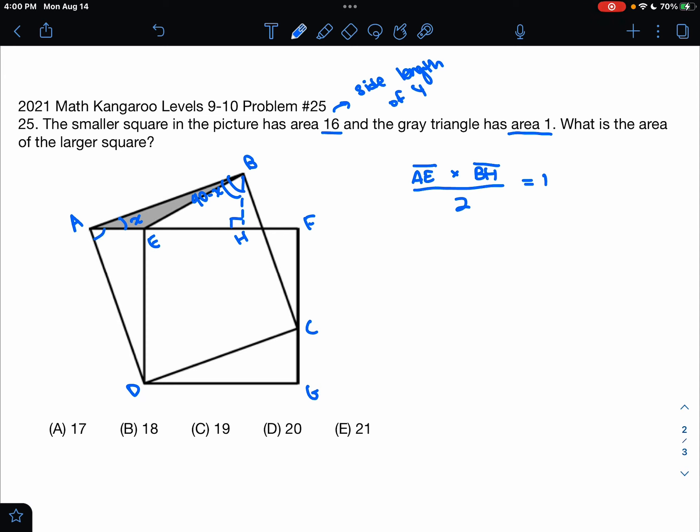Similarly, angle DAE would also have a measurement of 90 minus x because along with HAB it forms a 90 degree angle of the square, which makes angle ADE equal to x.